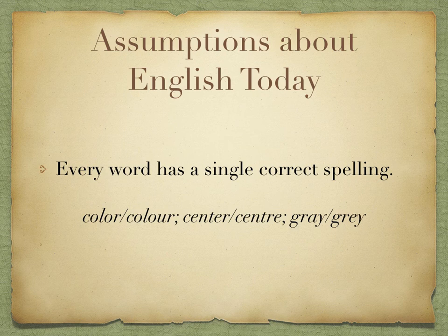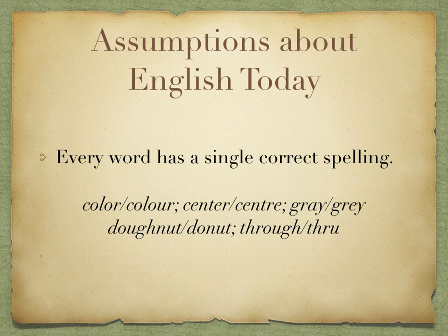Probably you might think of some examples like color and colour, center and centre, gray and grey, and so forth. But we recognize these as differences between American English and British English. There's a whole series of spelling differences between standard British English and standard American English. But really, those are not really exceptions to this rule — they just highlight the need to distinguish what is correct spelling in American English versus what is correct spelling in British English.